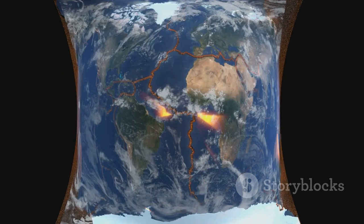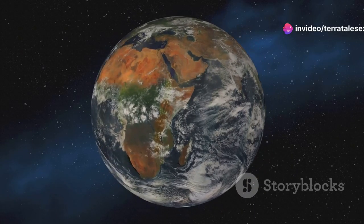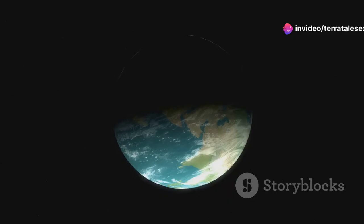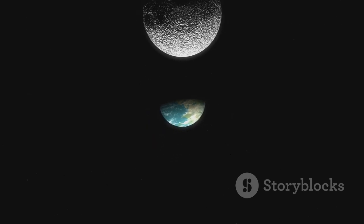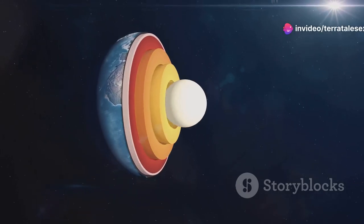This process, known as planetary differentiation, was a defining moment in Earth's evolution. It marked the beginning of a more organized and structured planet, setting the stage for future geological and atmospheric developments. It led to the formation of Earth's layered structure: a dense metallic core, a thick mantle, and a thinner outer crust.